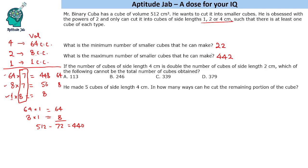Next question is, if the number of cubes of side length 4 cm is double the number of cubes of side length 2 cm, which of the following cannot be the total number of cubes obtained. The side length 4 will have a volume of 64. This has a volume of 8. We saw that we can have a maximum of 7 of this type. We cannot go beyond 7.